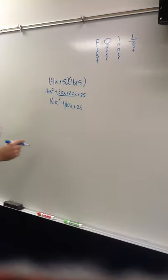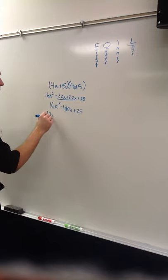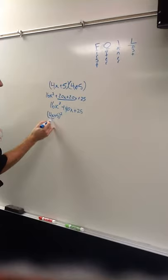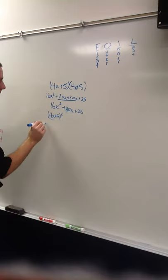Another way that you can solve it and get the same answer is, you can do this right here, 4x plus 5 squared. So, you'd multiply the first term by itself. You'd square the first term, so, 16x squared.